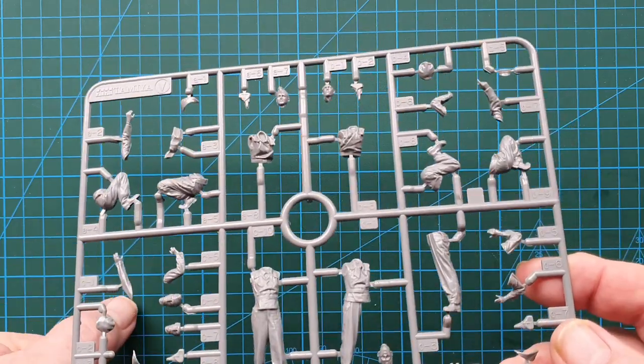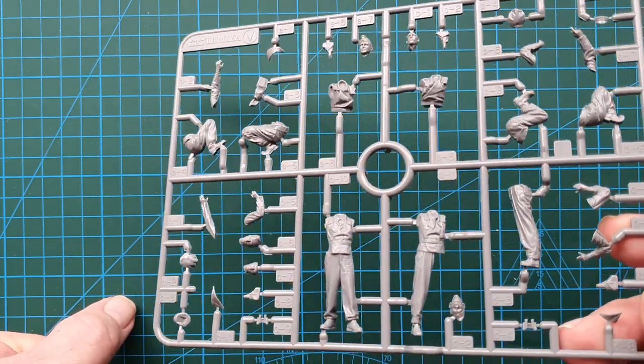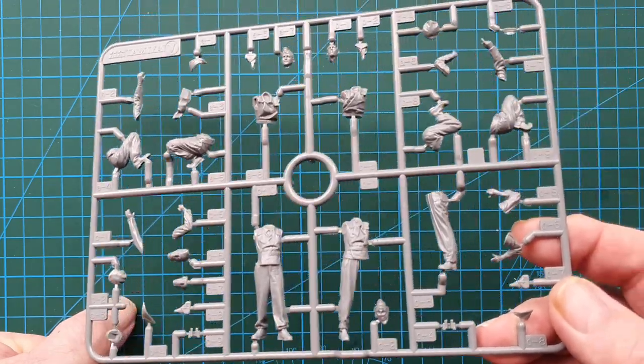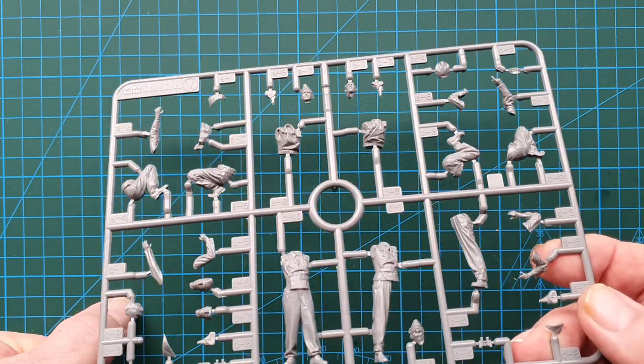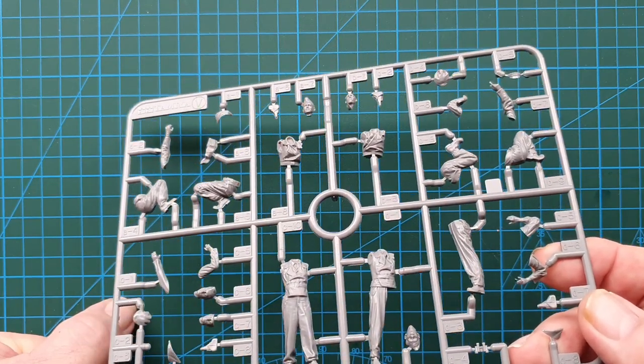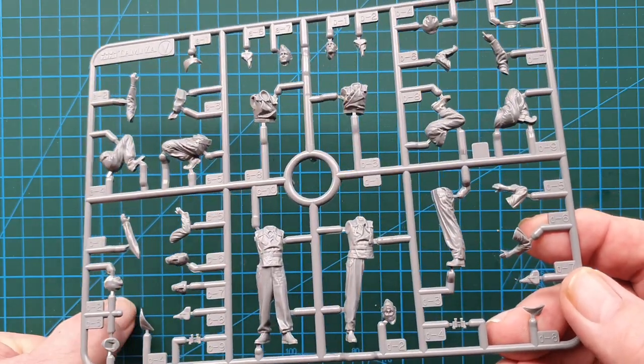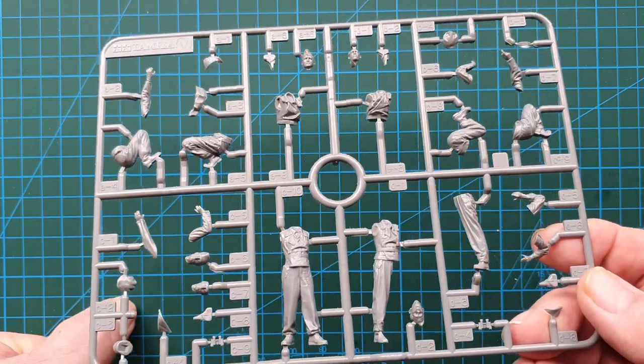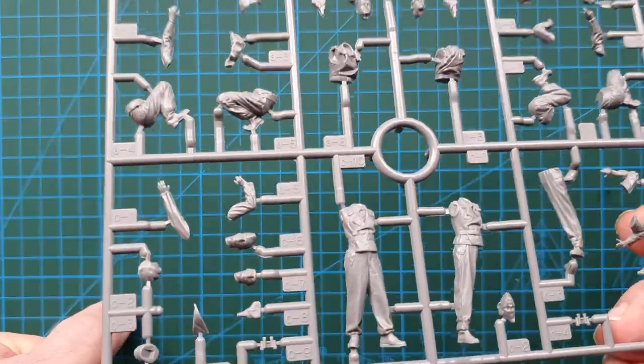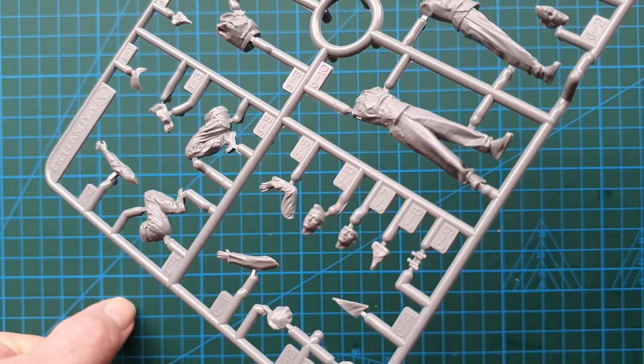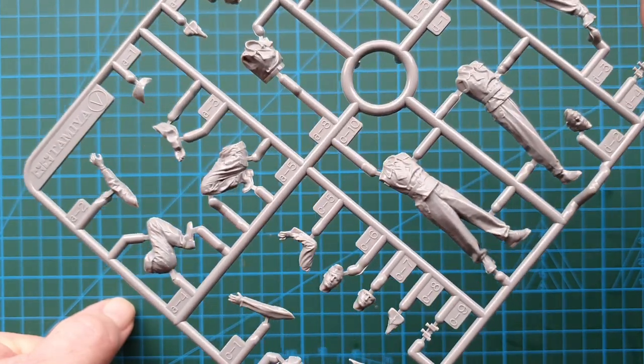So let's have a look. It appears you only get four headsets because there are no headsets on this sprue, but that's understandable because two of these guys are kneeling outside the tank—they wouldn't have the headset on. And if they're standing outside the tank they wouldn't have the headset on either, because they'd have to detach it before they could get out. Again, the faces are perfect. I love the faces, I love this kit.